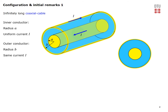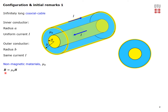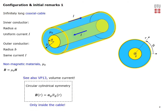The outer conductor has a radius B and carries the same current I but in the opposite direction. All materials of our coaxial cable are non-magnetic with free space permeability mu0, so we have a simple relationship between the magnetic flux density and the magnetic field intensity. The inner conductor is essentially the configuration of volume current density considered in video problem 13.